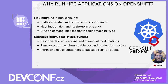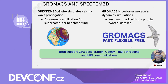The last aspect of HPC is, of course, performance, and presenting the performance of OpenShift is the topic of this presentation. The first scientific application we use is SPECFEM 3D GLOBE, which simulates seismic wave propagation in the Earth's crust. It's a reference application for supercomputer benchmarking thanks to its good scaling capabilities. The second is GROMAX, which performs molecular dynamics simulation using the WATER dataset. Both applications support GPU acceleration, OpenMP multithreading, and MPI communication for internal parallelism. In this study, we focused on the MPI communication aspect.